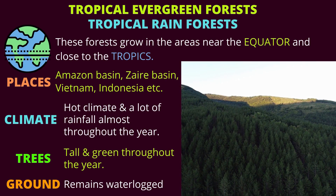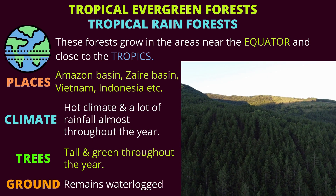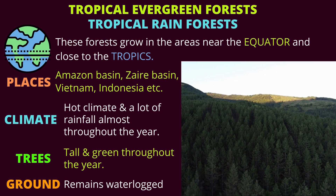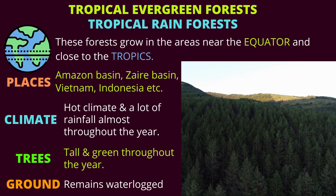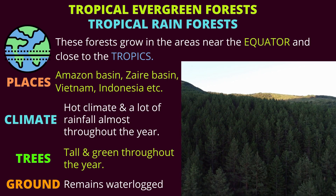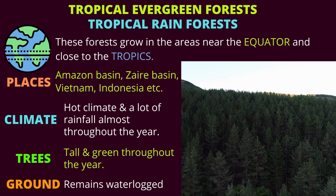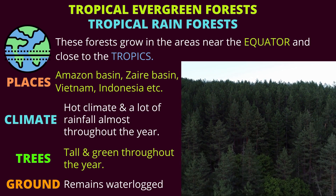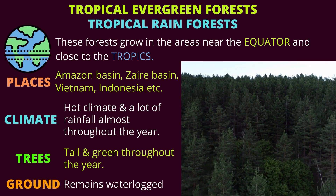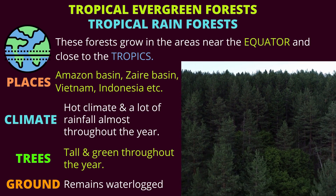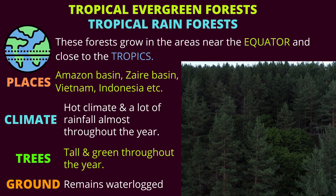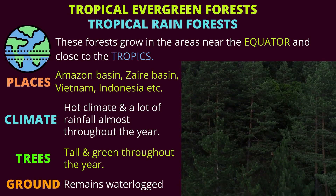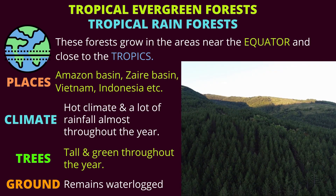Tropical Evergreen Forests — they are also known as the Tropical Rain Forests. Where are these forests found? They grow in areas near the equator. That is the equator, and that is where these forests grow. Those dotted lines above and below the equator are the tropics, and that is also where we can find these evergreen rainforests.